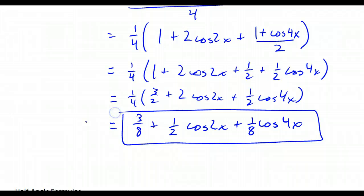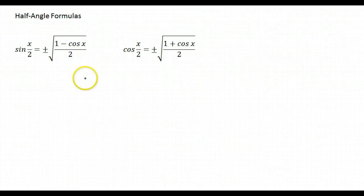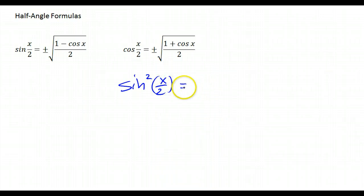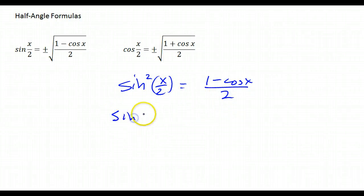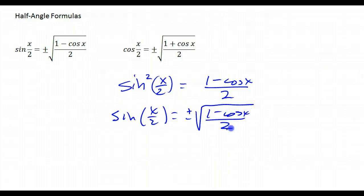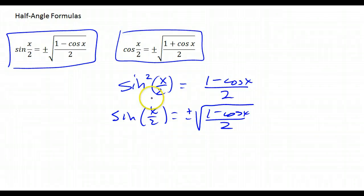If we take those power reducing formulas and substitute half x in for x, we get sine squared of x over 2 equals 1 minus cosine x over 2. Taking the square root of both sides gives the sine of x over 2 equals plus or minus the square root of 1 minus cosine x over 2. These are called the half angle formulas because they tell us the sine or cosine of half an angle. The plus or minus depends on what quadrant the half angle ends up in.